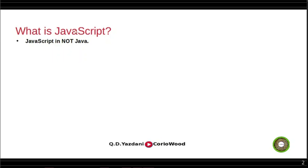If you're thinking that JavaScript is another version of Java, you're wrong — they have nothing in common. They may share a similar name, but that doesn't mean anything, just like sharing a surname doesn't make you part of someone's family. JavaScript is totally different — JavaScript is not Java.